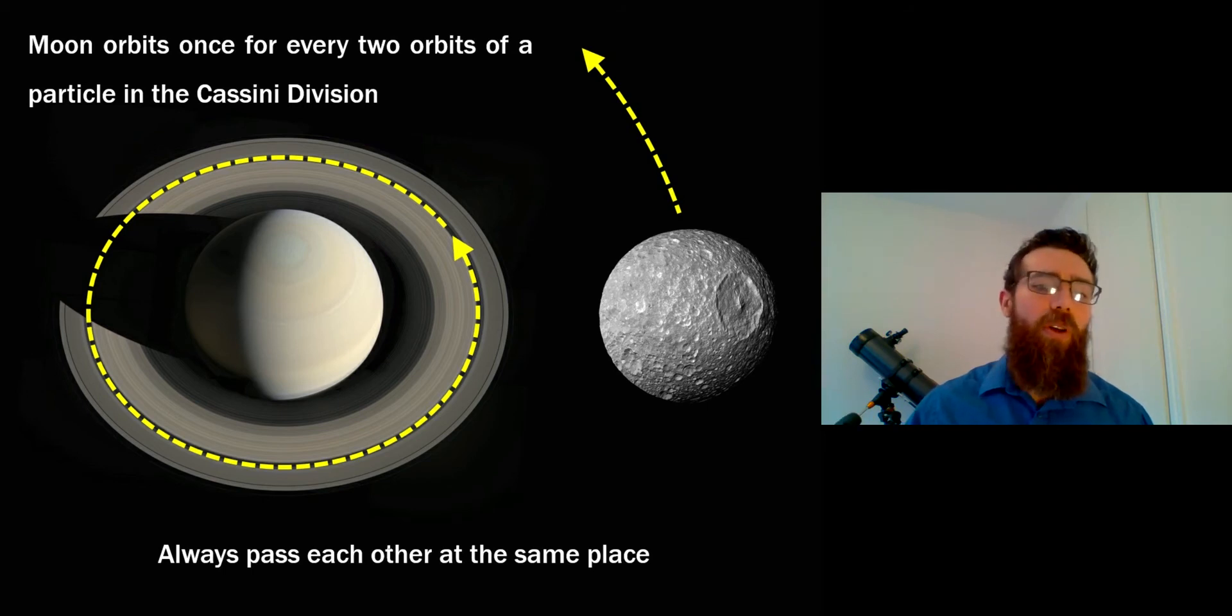If you remember Kepler's laws then you'll realize that the closer you get to Saturn the ring is going to be orbiting faster, which is why the ring particle needs to go around twice for one orbit of the moon. And you can work out where these resonances might occur actually even if you can't see the moon.